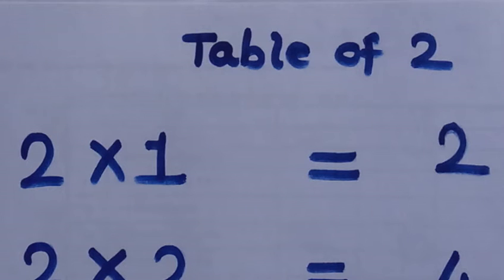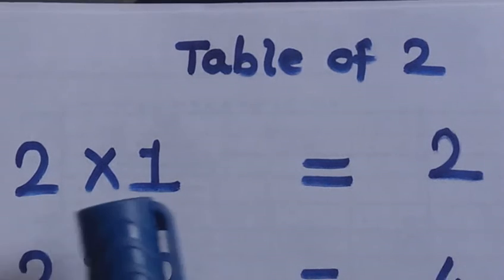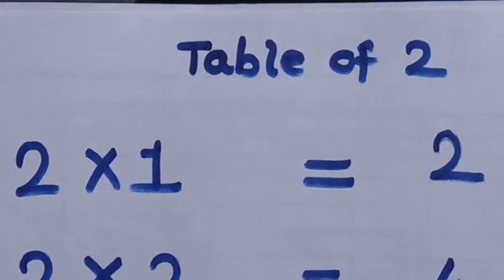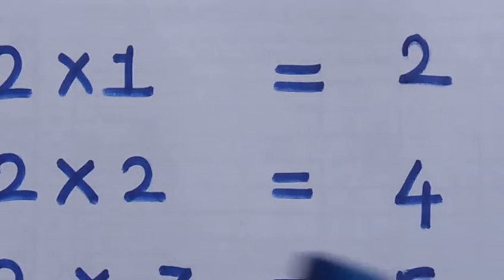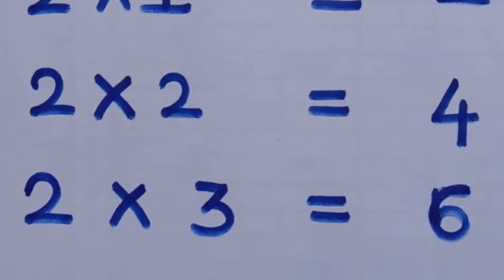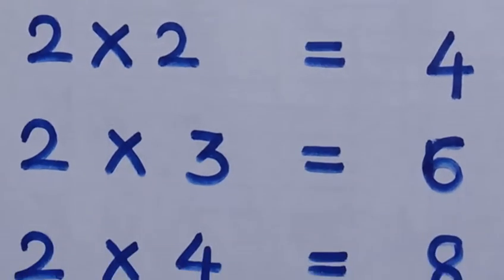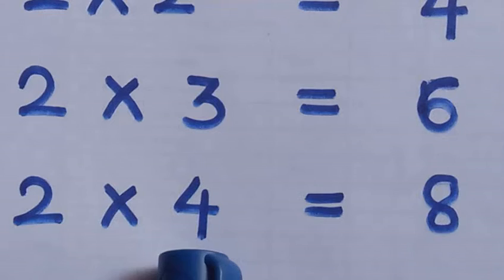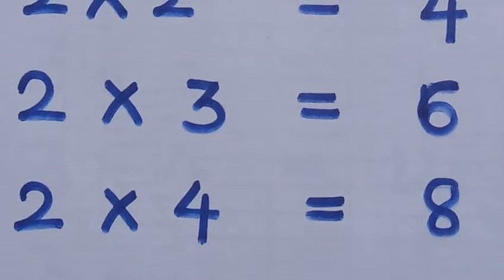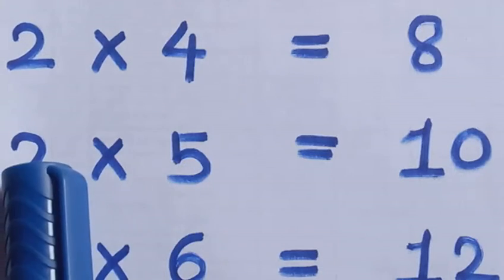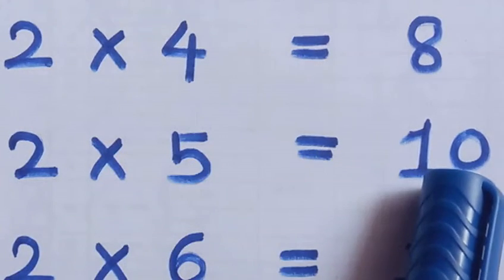Let's start. Two ones are two. Two twos are four. Two threes are six. Two fours are eight. Two fives are ten.